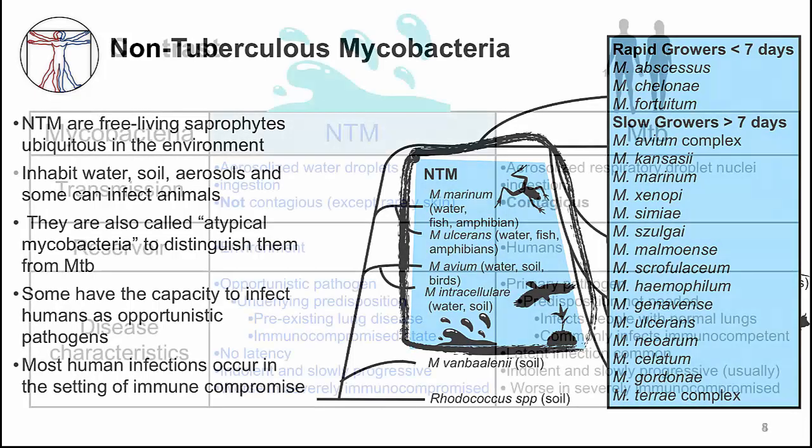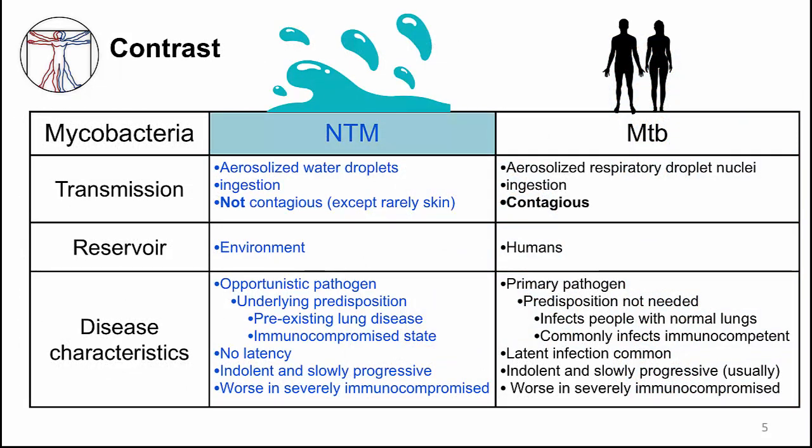To help you learn about NTMs, I'm going to compare and contrast NTMs to MTB. There are several major differences. One of the biggest is that NTM infections are not contagious — a person is infected by exposure to the environment. In contrast, MTB is contagious; you become infected with MTB by exposure to another infected person. Another difference is that NTMs are opportunistic pathogens, not primary pathogens like MTB. Most people infected with NTMs have some underlying predisposition. A third important difference is that NTMs don't have a latent infection phase like MTB.